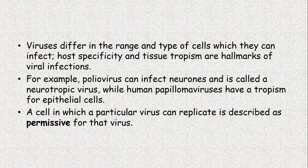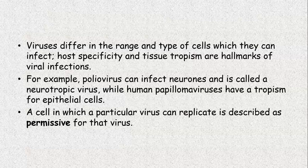Viruses differ in range and type of cells which they can infect. Host specificity and tissue tropism are the hallmark of viral infections. For example, the polio virus can infect neurons and is called as the neurotropic virus, while human papillomavirus have a tropism for epithelial cells and would not involve neurons. A cell in which a particular virus can replicate is described as permissive for that virus.